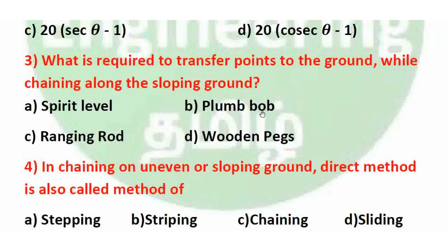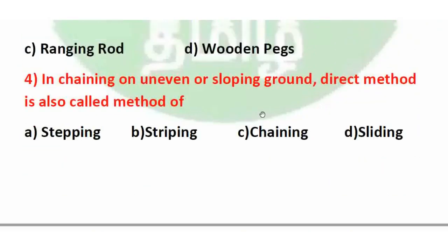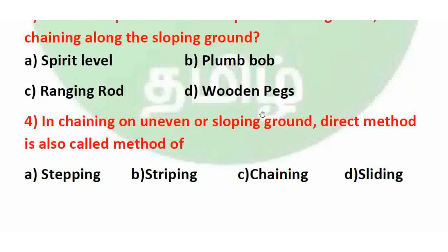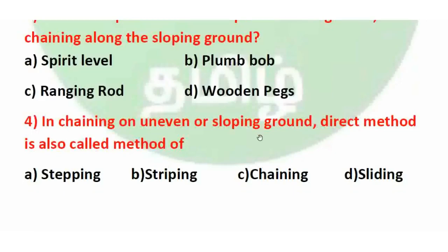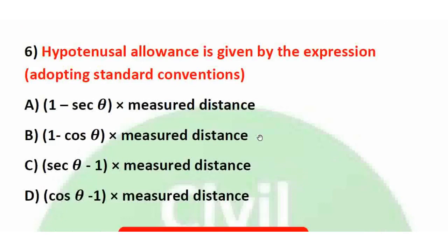In chaining on uneven or sloping ground, the direct method is also called the method of stepping. In small steps, we measure horizontal distance directly in the field. The hypotenusal allowance is given by the expression: (sec θ − 1) × measured distance. The correct answer is Option C: sec θ − 1 multiplied by the measured distance.